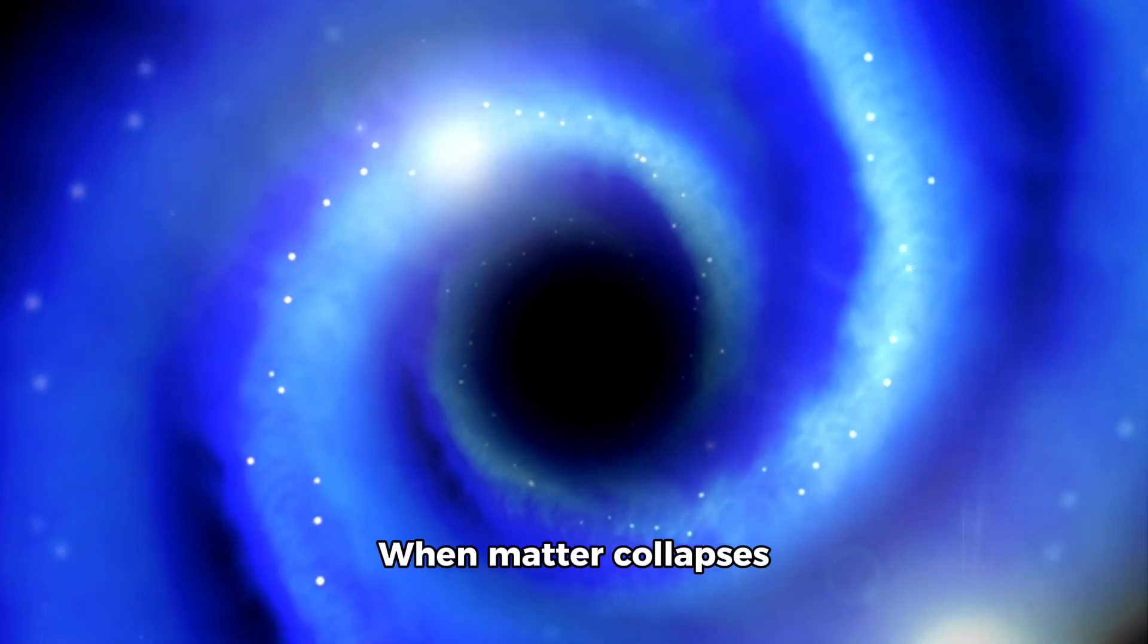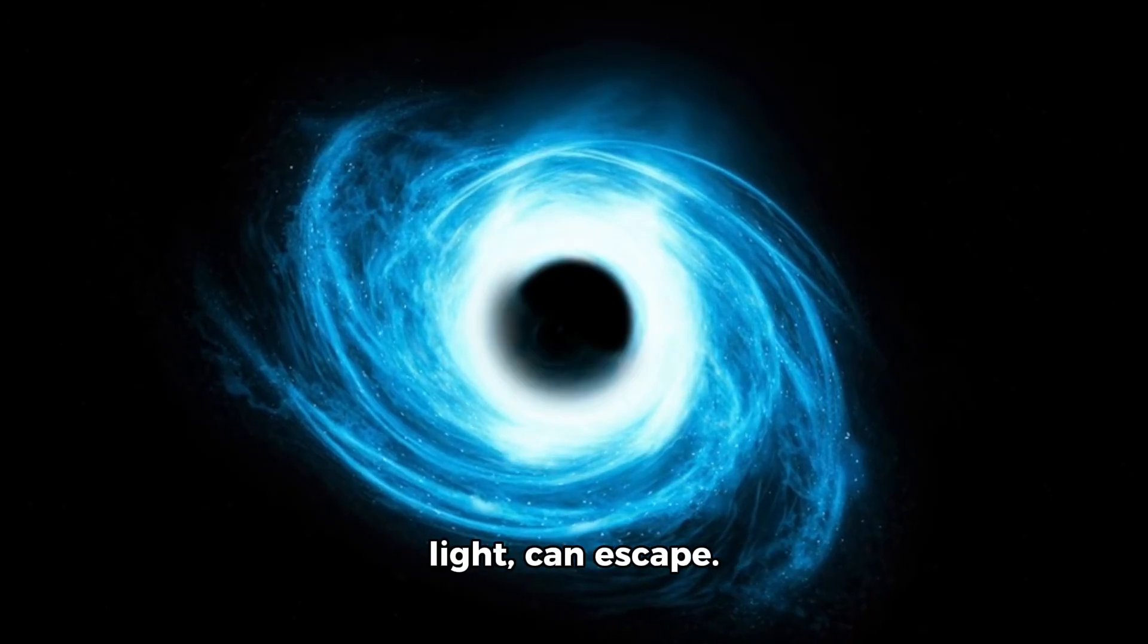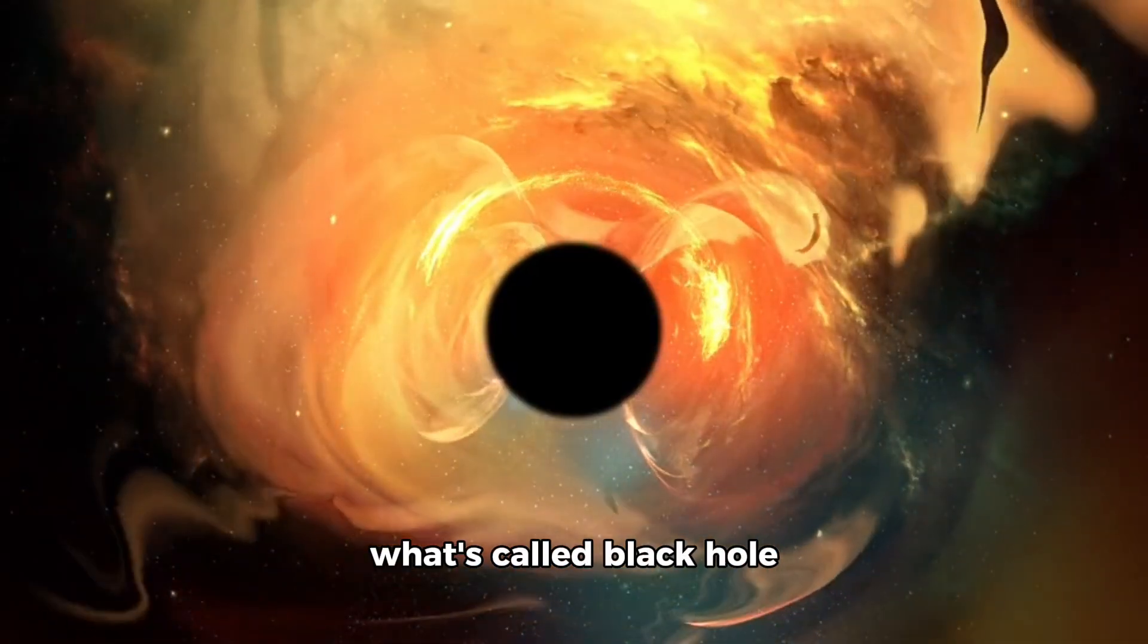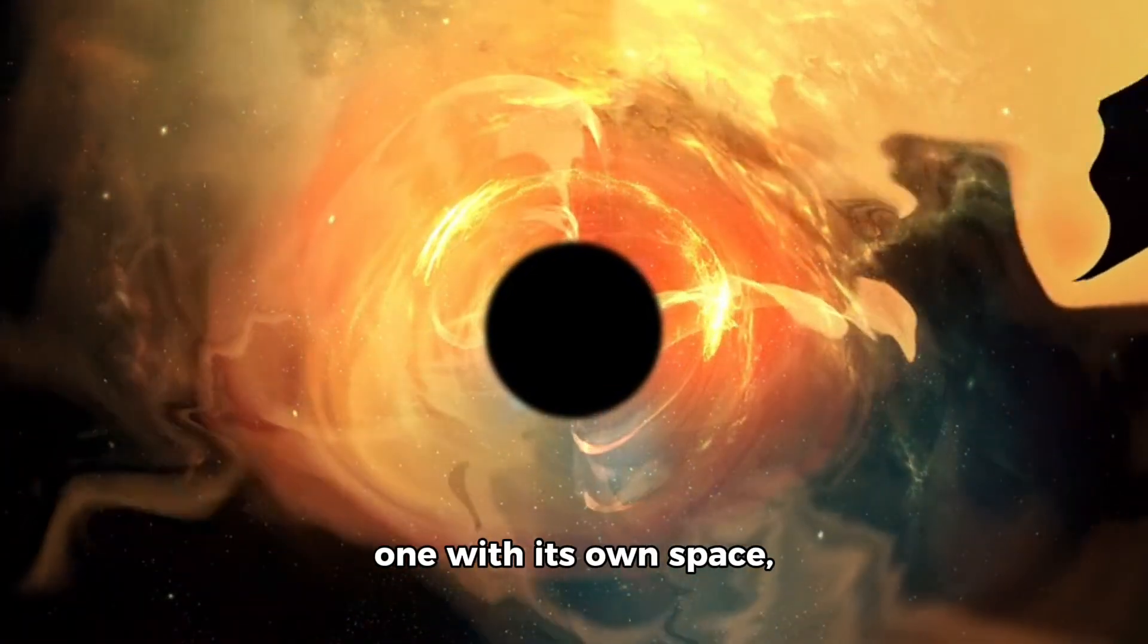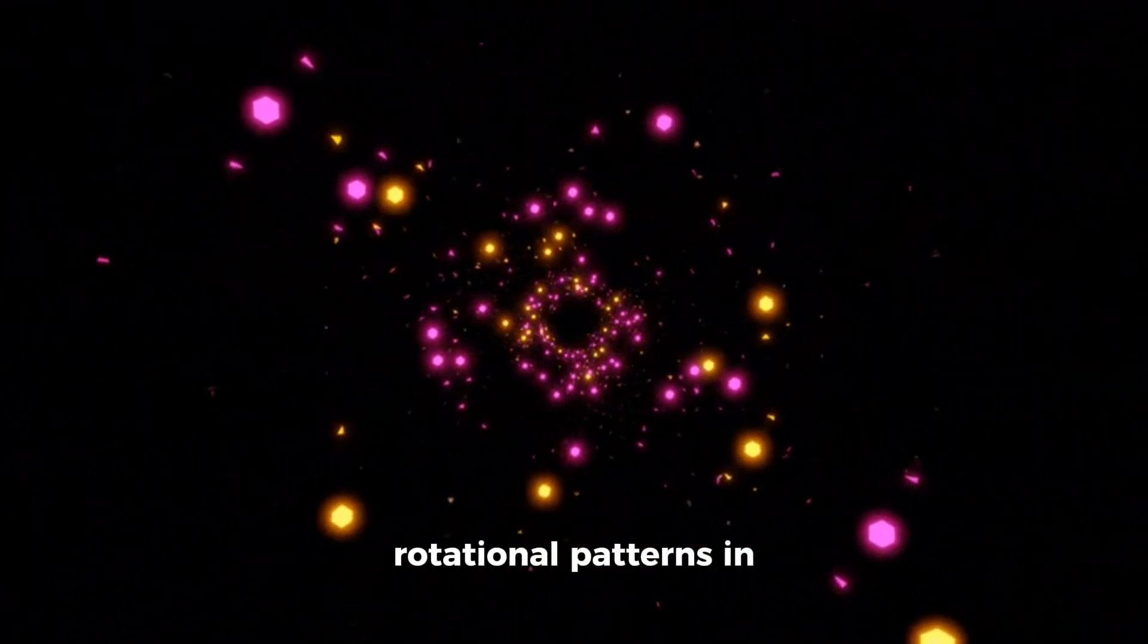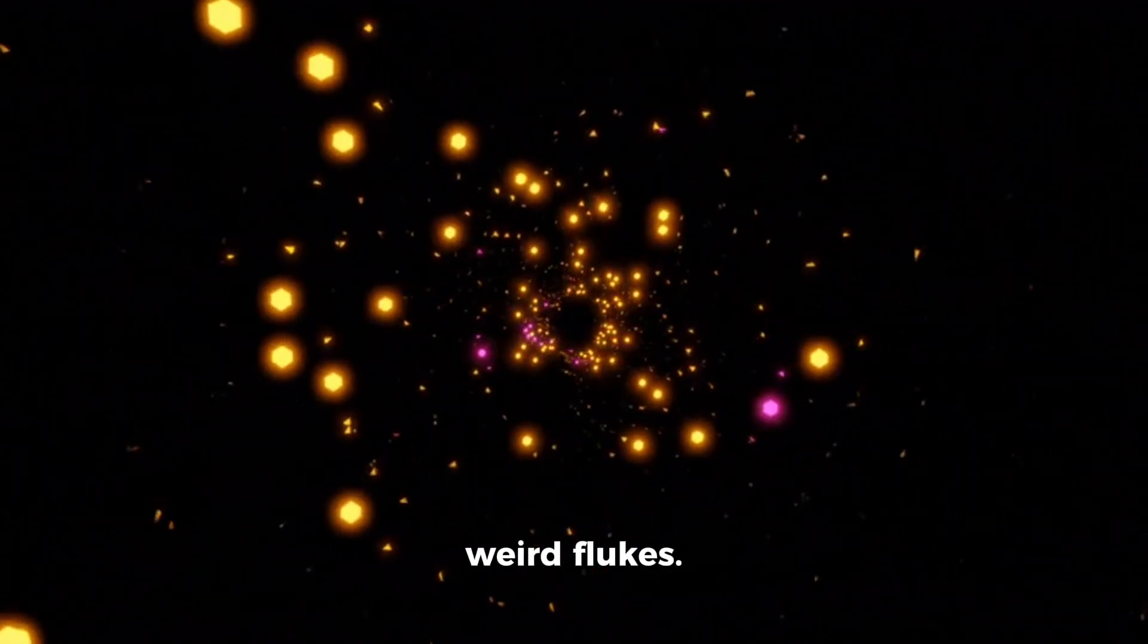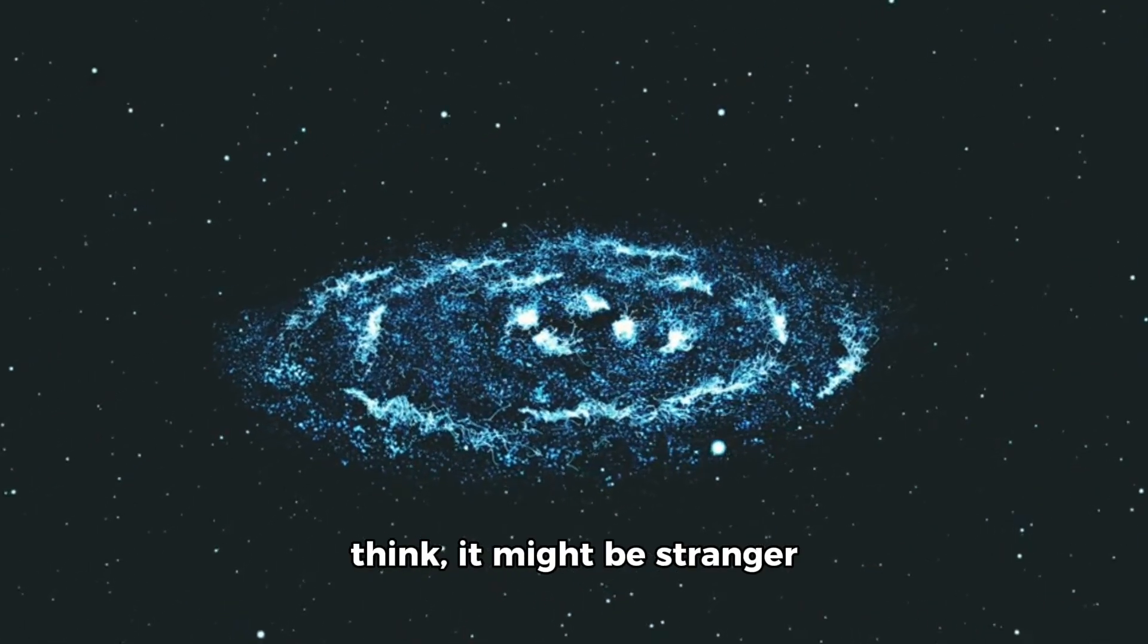Stay with me here. When matter collapses into a black hole, it creates an event horizon, a boundary where nothing, not even light, can escape. What happens beyond that horizon is still one of the biggest mysteries in physics. Some theories, part of what's called black hole cosmology, suggest that what's inside a black hole could look like an entirely new universe, one with its own space, time, galaxies, and physical laws. So when we see strange rotational patterns in galaxies, when we find ancient chemically advanced galaxies that shouldn't exist yet, maybe these aren't just weird flukes. Maybe they're clues. Clues that the universe is not only stranger than we think, it might be stranger than we can think.